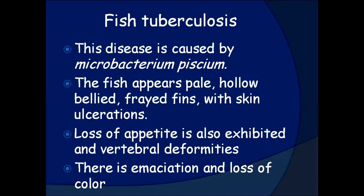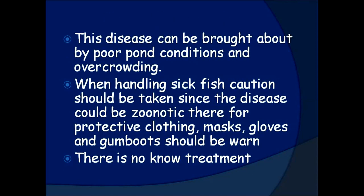Fish tuberculosis. This disease is caused by Mycobacterium species. The fish appears pale, hollow-bellied, with frayed fins and skin ulcerations. Loss of appetite is also exhibited along with vertebral deformities. There is emaciation and loss of condition. This disease can be brought about by poor pond conditions and overcrowding.